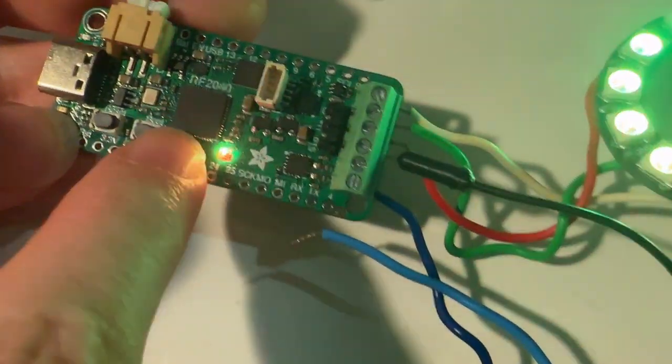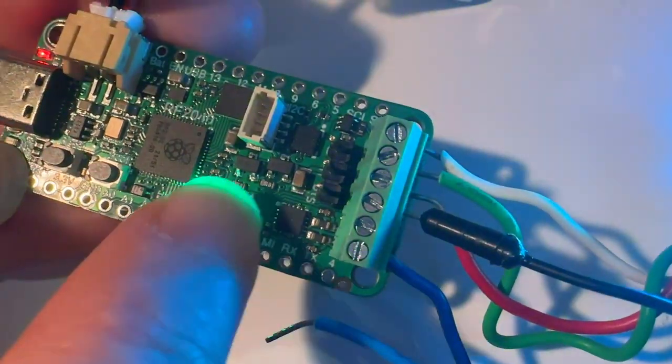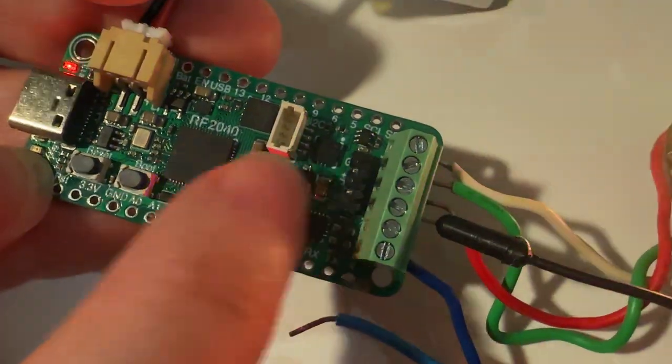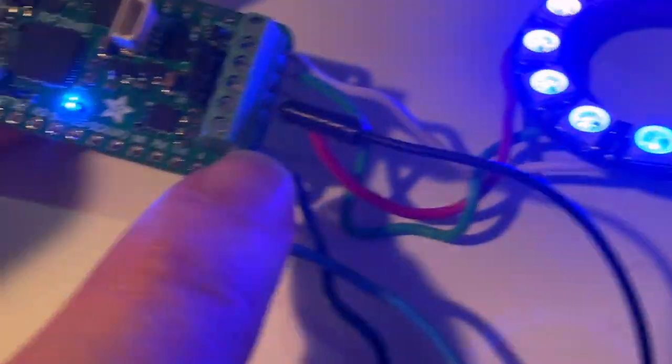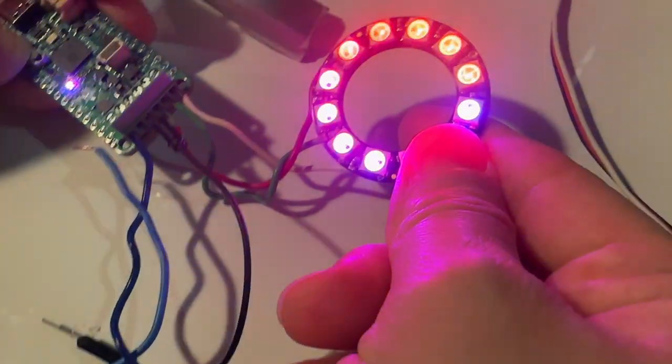It's got 8 megabytes of flash, the RP2040, Stemma QT, and it's got a bunch of cool accessories like an i2s amp, an accelerometer, and pre-soldered terminal blocks to make it really easy to make props.